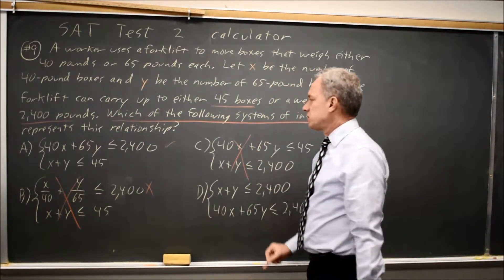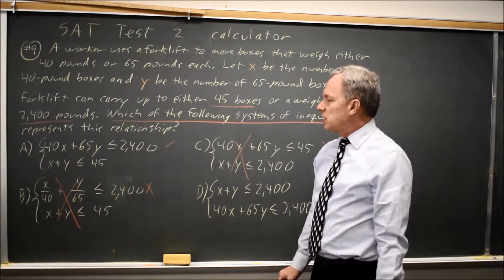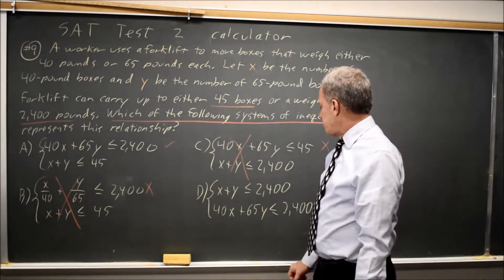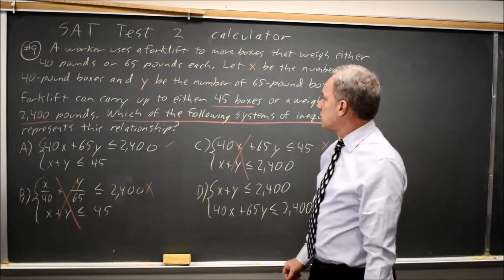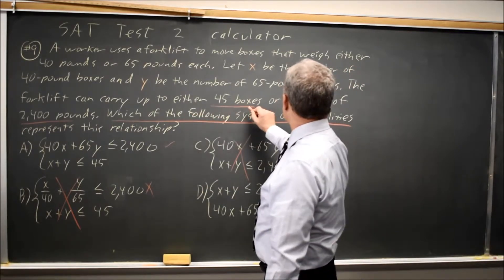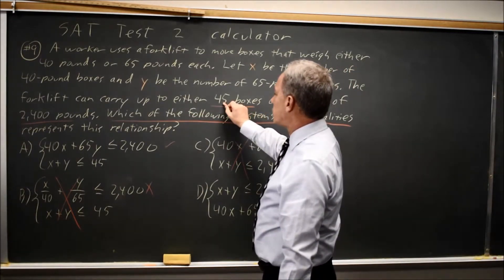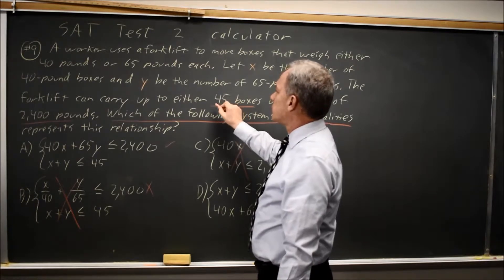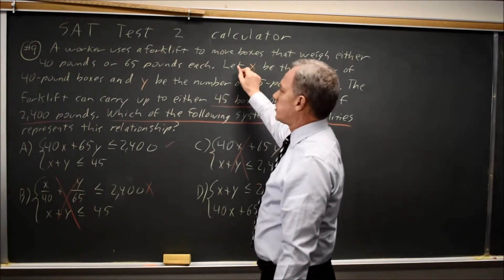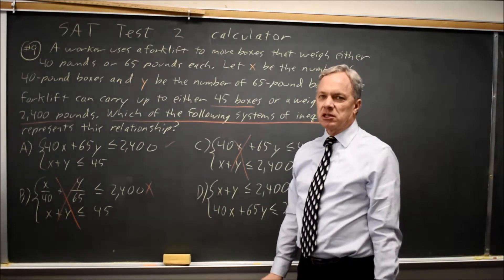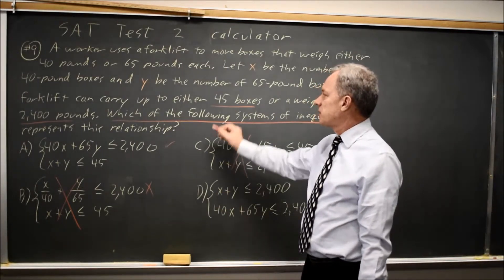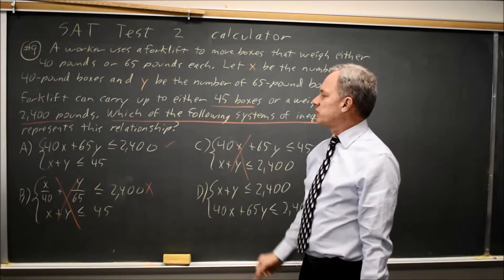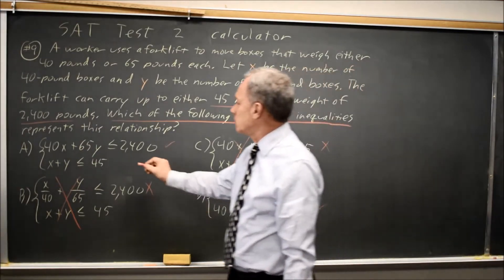We don't even have to check the second equation for each. Next, we have a relationship that we can carry up to 45 boxes. The number of boxes is X, the number of 40-pound boxes, plus Y, the number of 65-pound boxes. So the number of boxes, X plus Y, can be up to 45: X plus Y less than or equal to 45.